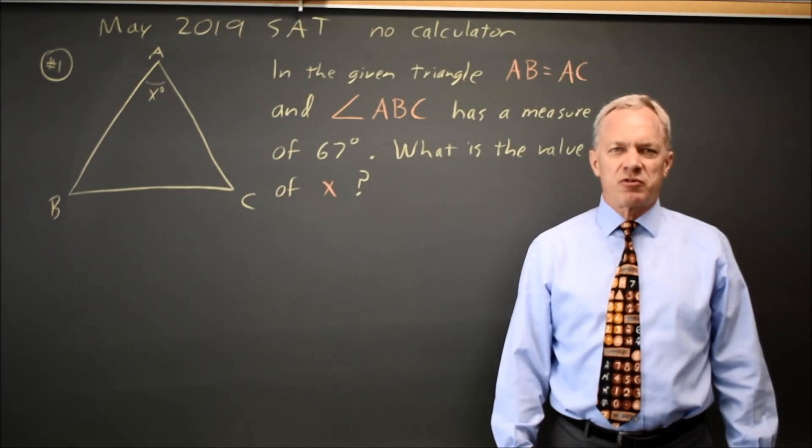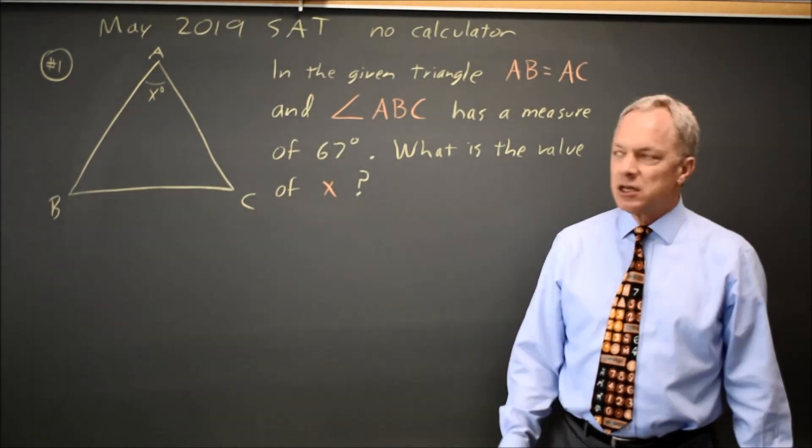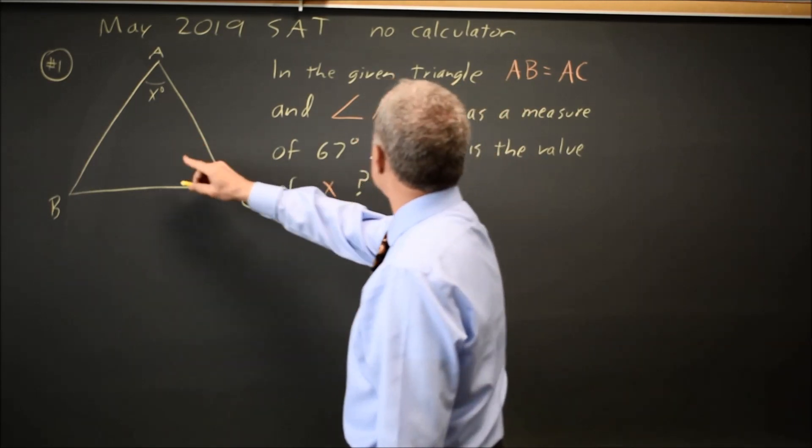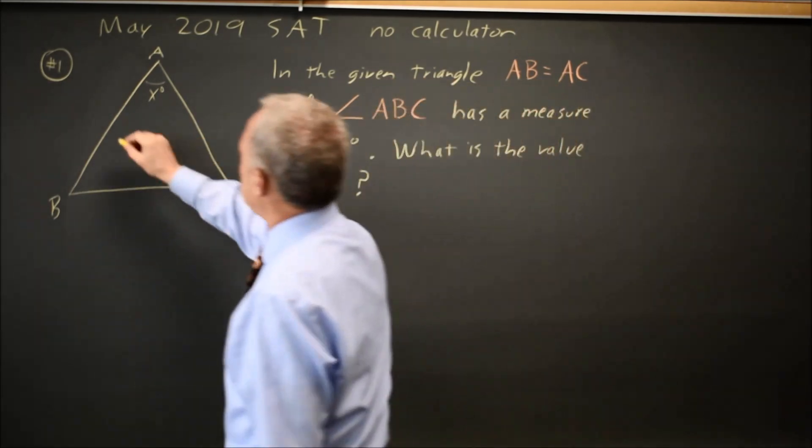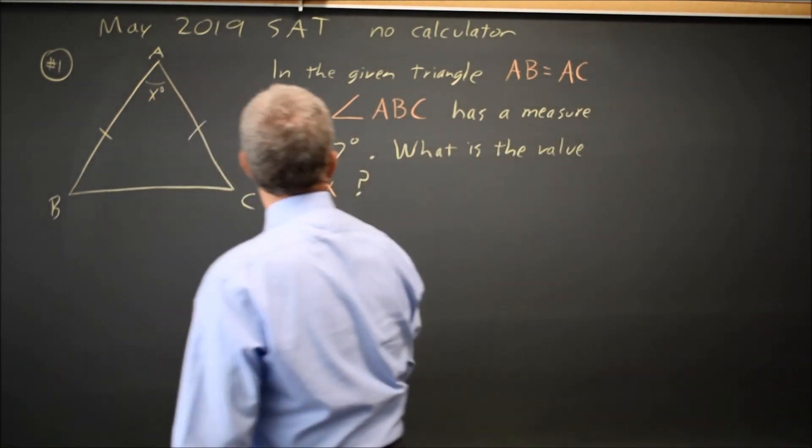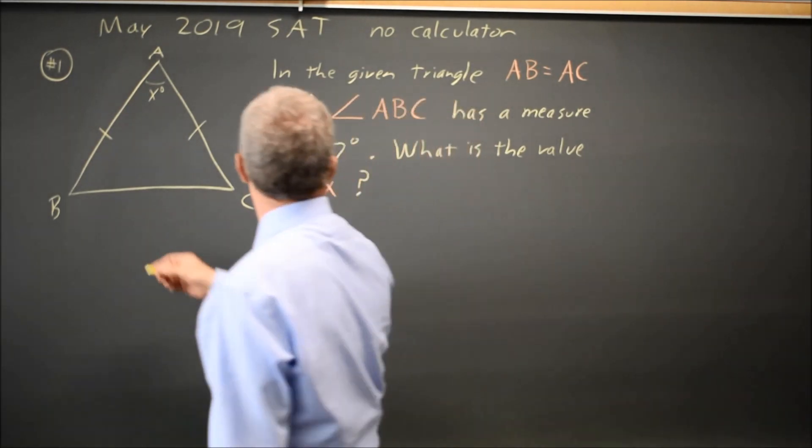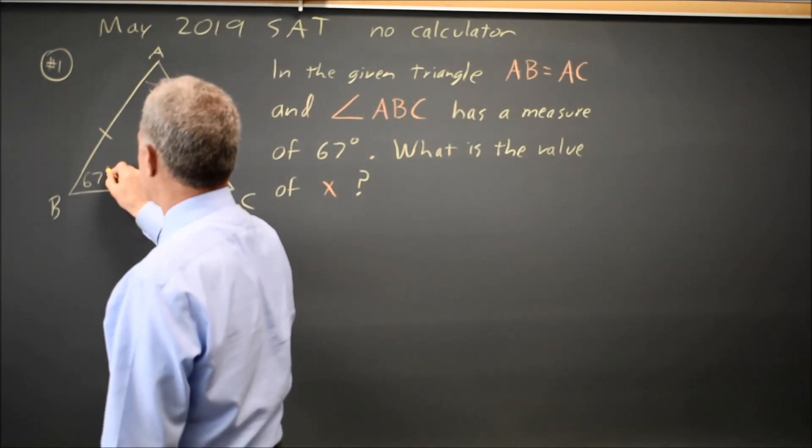This is non-calculator question 1 from the May 2019 SAT. College Board gives us a triangle, and they tell us that sides AB and AC are equal, and angle ABC is 67 degrees.